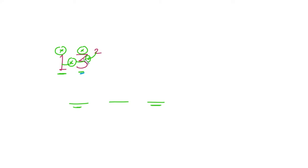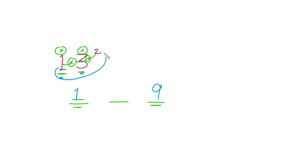First step: multiply this number by itself — three multiplied by three is nine, so we write nine here. Second step: multiply this number by itself — one multiplied by one is one, so we write one here. Third step: multiply all these numbers together — one multiplied by three is three, and three multiplied by two is six, so we write six here.